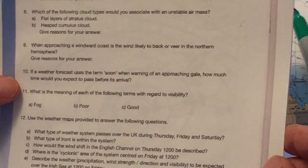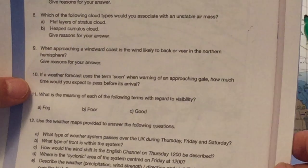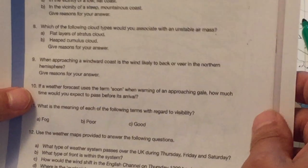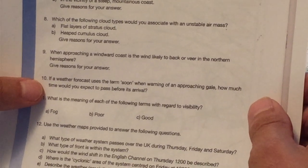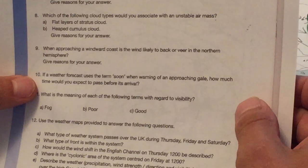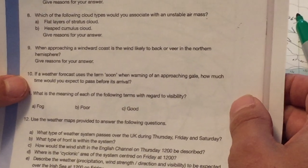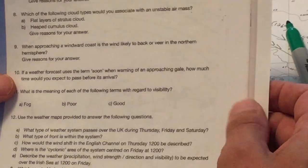If a weather forecast uses the term soon when warning of an approaching gale, how much time would you expect to pass? Okay, well, this is basic stuff, right, guys? So I remember that imminent is less than six hours, and I remember that soon is six to 12 hours. And I think later is any time after 12 hours.